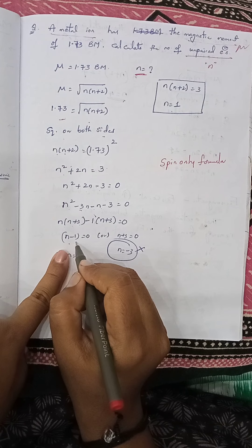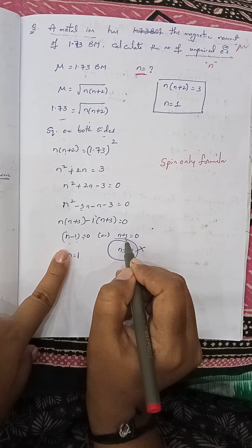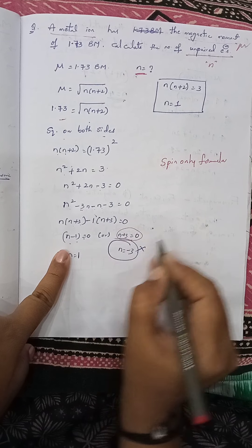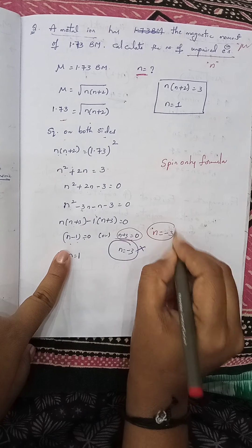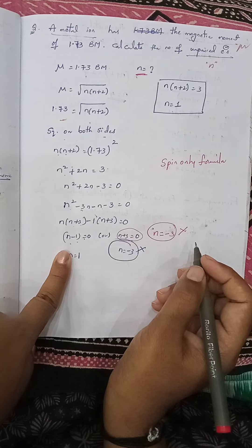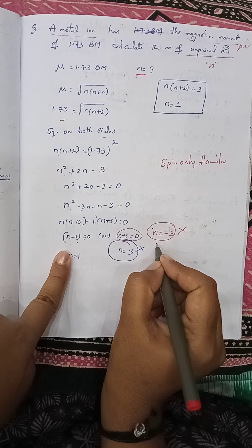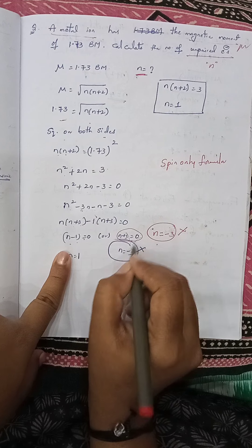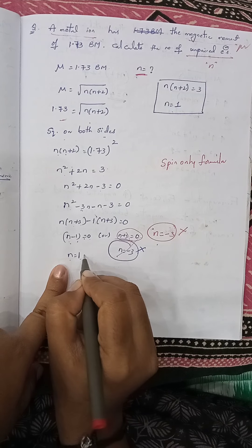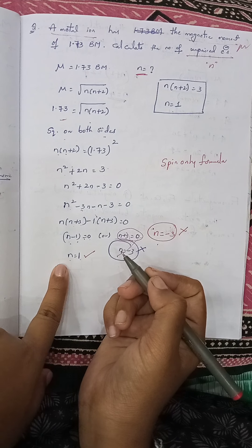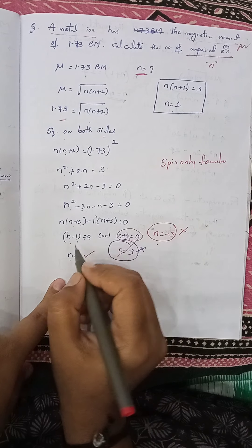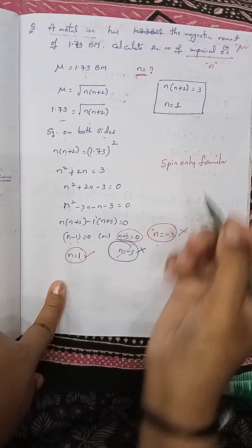μ is 1.73, so substituting into the formula: 1.73 = √(n(n+2)). Taking square on both sides, the square root gets cancelled and it becomes n(n+2) = 1.73², which equals 3. Expanding: n² + 2n = 3.